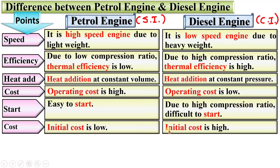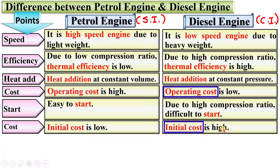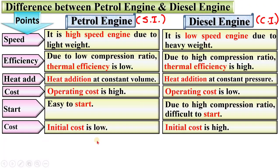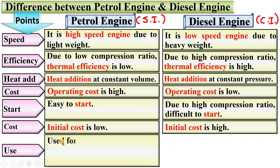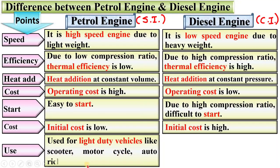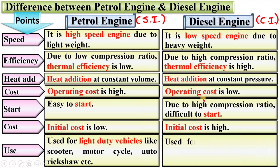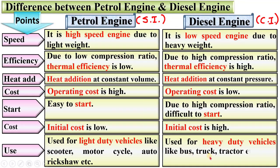Cost: initial cost is low for petrol engine, whereas in case of diesel engine initial cost is high. Operating cost and initial cost are always opposite — if operating cost is low then initial cost is high, and vice versa. Petrol engine is used for light duty vehicles like scooter, motorcycle, and auto rickshaw. Diesel engine is used for heavy duty vehicles like bus, truck, and tractor.